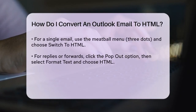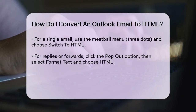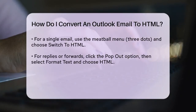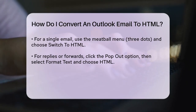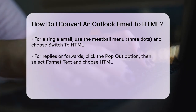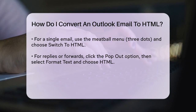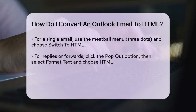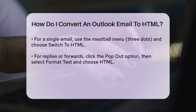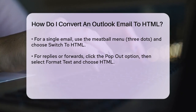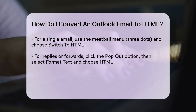Click on it and select Switch to HTML from the drop-down menu. For replies or forwarded messages, you might need to adjust the format manually. After hitting the Reply or Forward button, click on the Pop-out option on the top-right corner to open the message in a separate window. Then, select Format Text and choose HTML from the options.